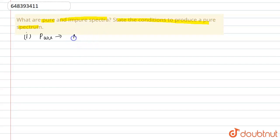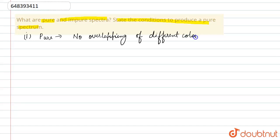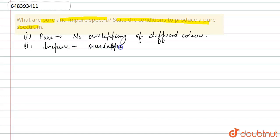So pure spectra are those in which there is no overlapping of different colors. And similarly, impure spectra are those spectra where there is overlapping of different colors.